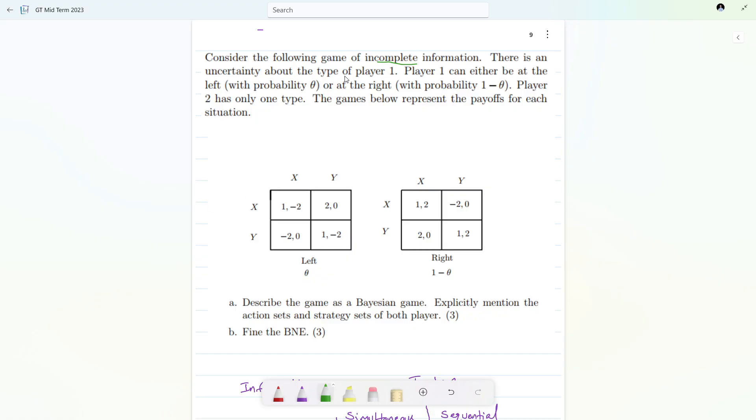There is an uncertainty about the player one type. Player two has only one type which is X or Y, but player two can have left or right - X and Y is its strategy not the type. With the probability theta, player one can play left, and with one minus theta he can play right.